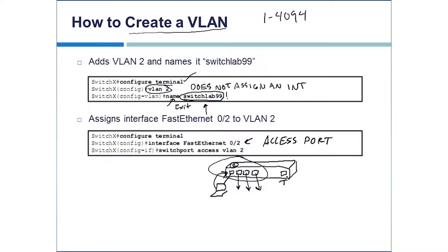There is a special port called a trunk port, coming up shortly, that will carry all VLAN traffic so it can get to a different switch — but not the access port. What we've done here is assigned interface 0/2 using the command 'switchport mode access' and assigning it to VLAN number 2. Switchport means it's a Layer 2 port, not a routed Layer 3 port. There is the ability to add an extra VLAN to a switch port for voice over IP phone traffic, to keep it separate from data traffic. That command now assigns FastEthernet interface 0/2 to VLAN number 2, adding or removing the VLAN tag depending on the direction traffic is flowing.